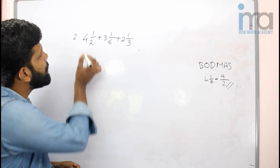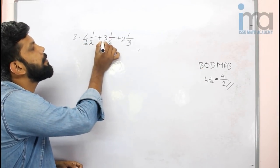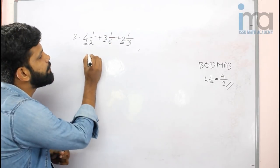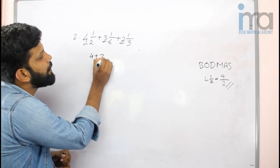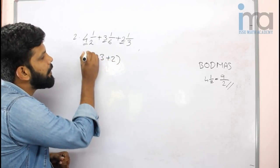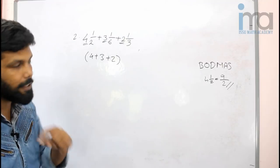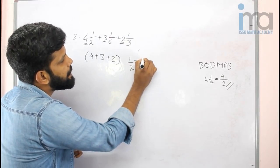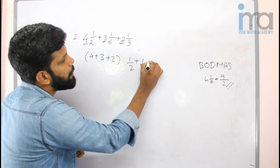These are the whole numbers: 4, 3, 2. You can add 4 plus 3 plus 2. This is the other side. This is the whole number of fractions: 1 by 2 plus 1 by 6 plus 1 by 3.